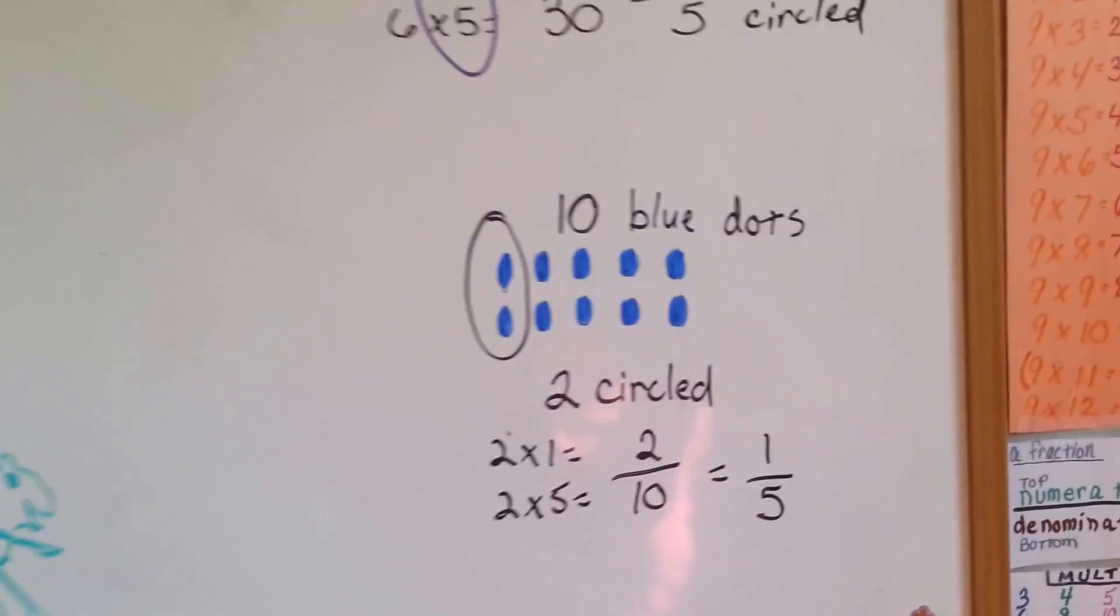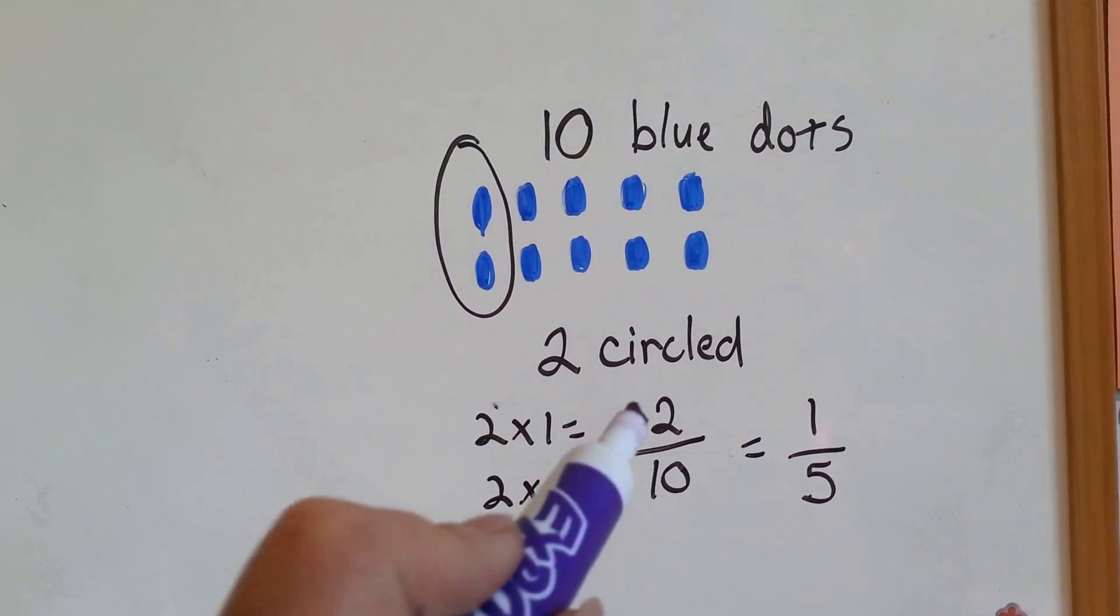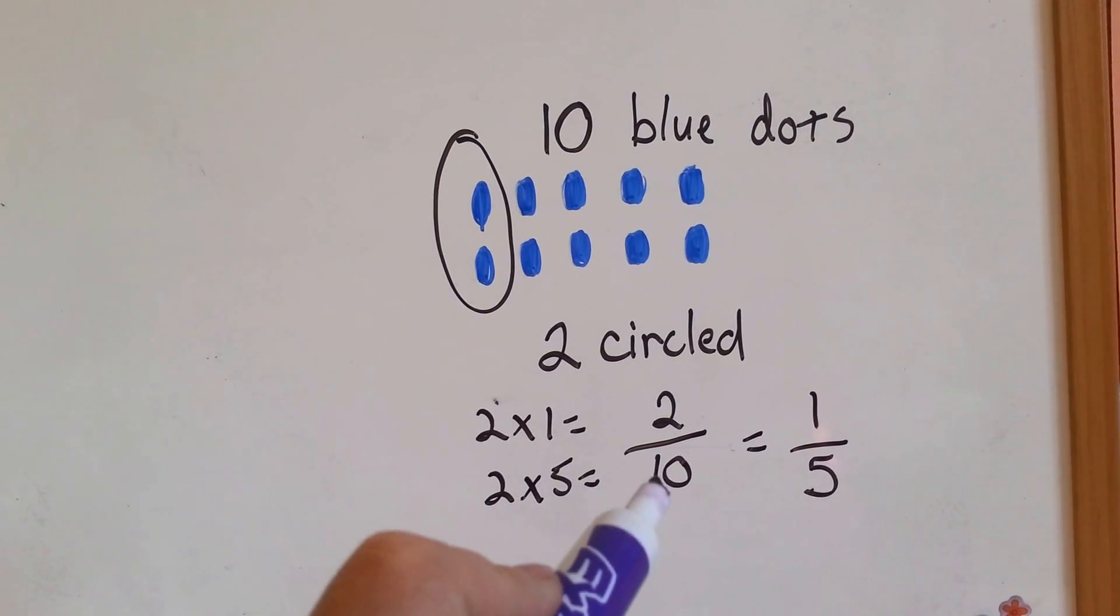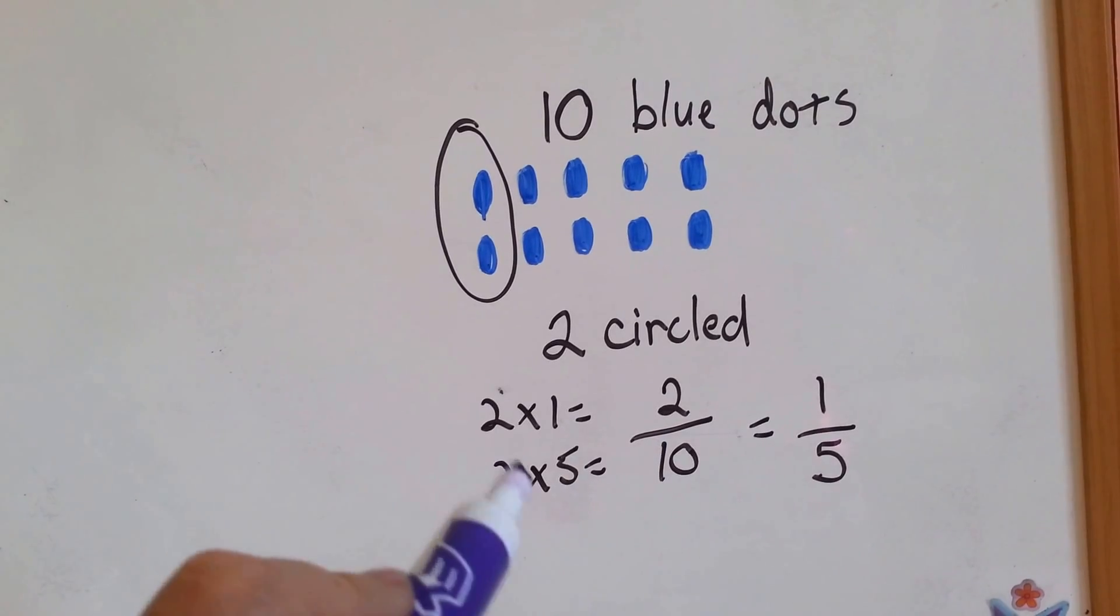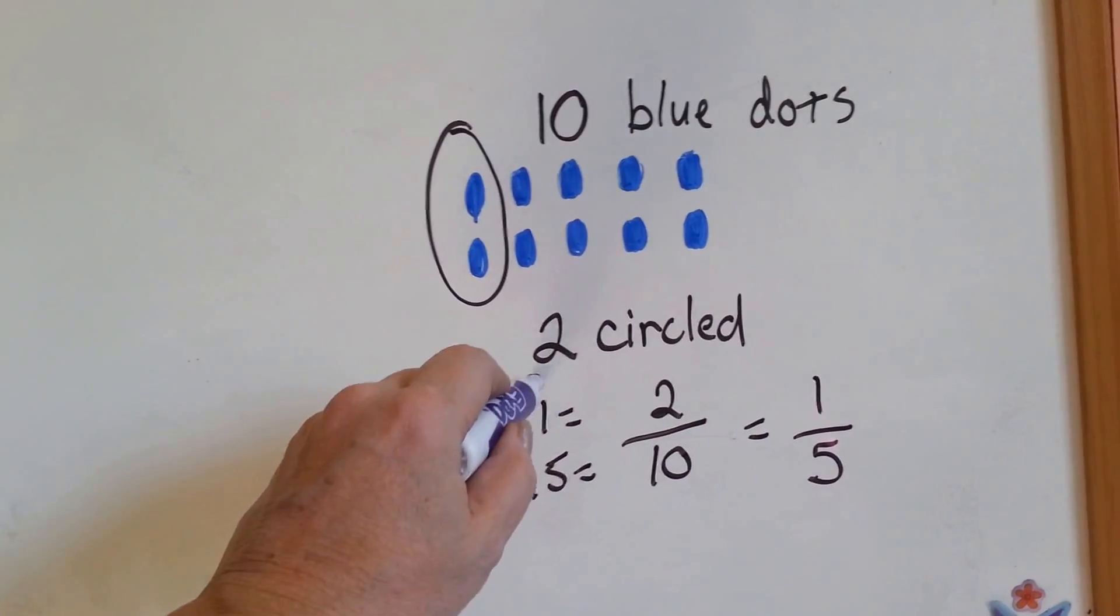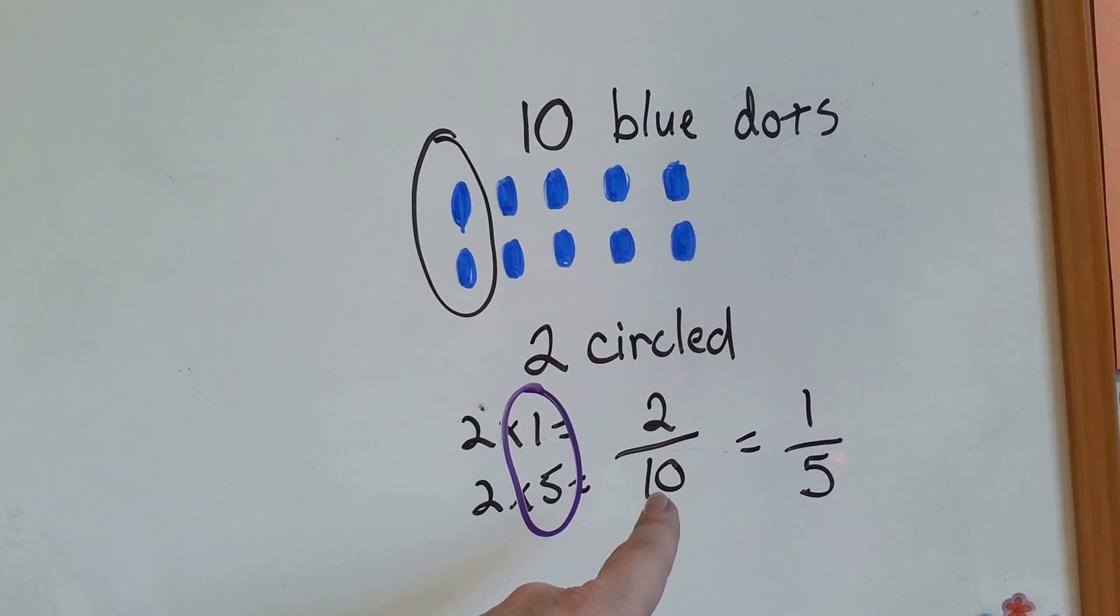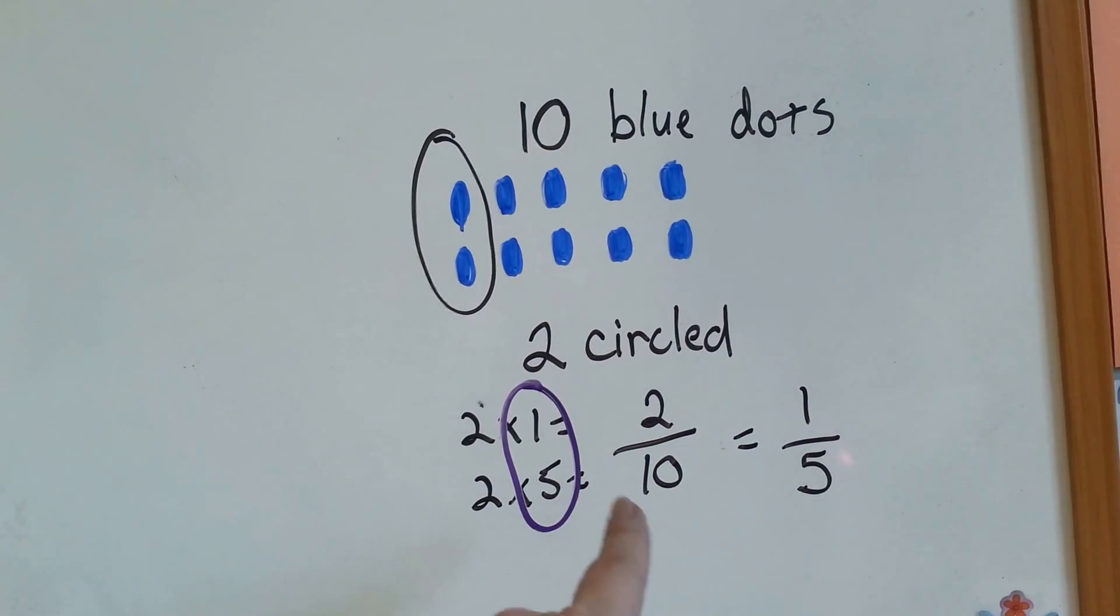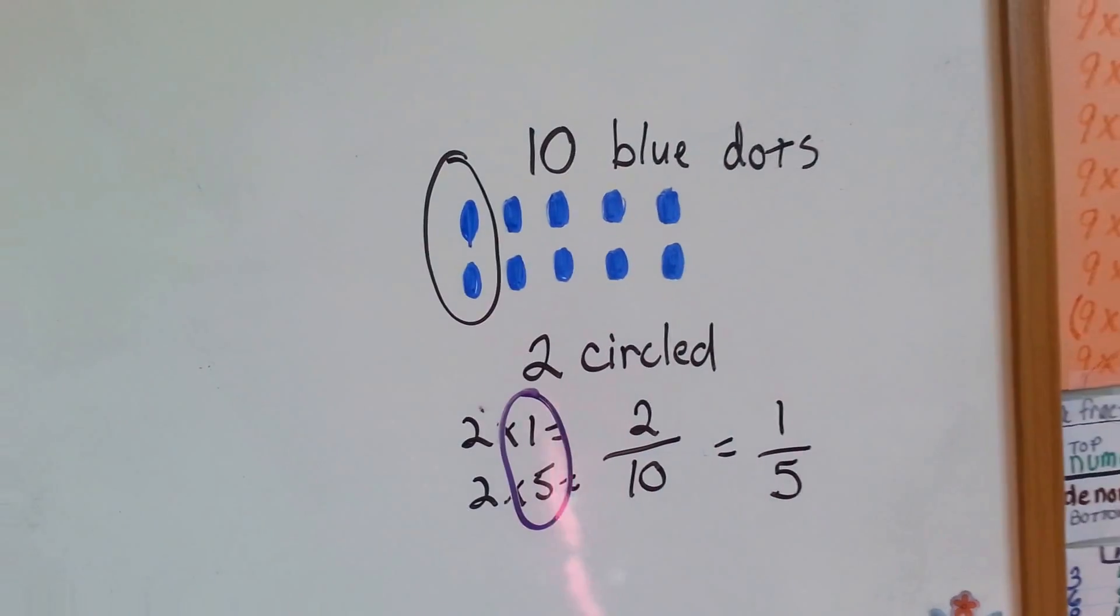Let's try another one. Ten blue dots. Two are circled. Two are circled out of ten total. Two-tenths. Two times one is two. Two times five is ten. Here's our one-fifth. How many times can two go into ten? Two goes into ten five times. One-fifth. See how that works?